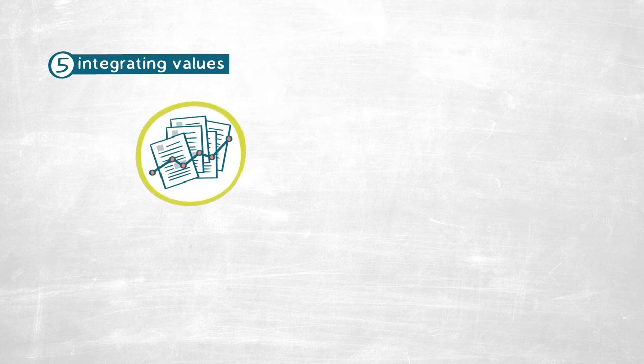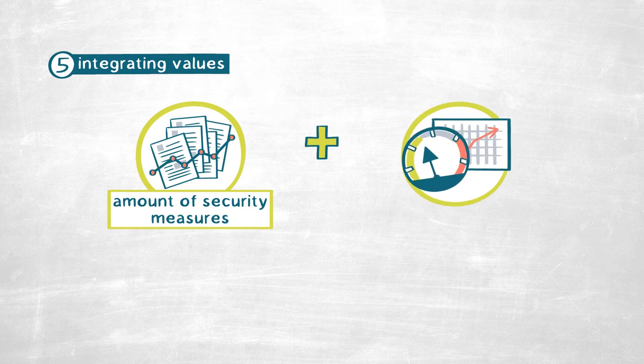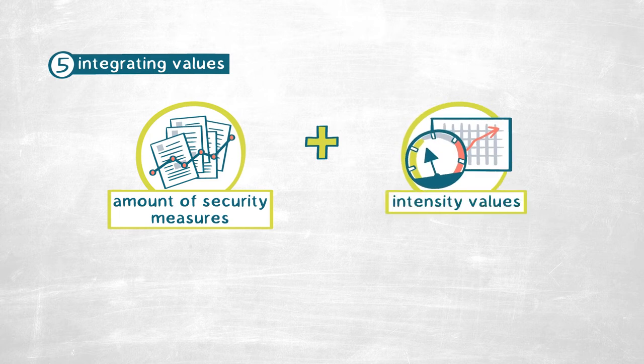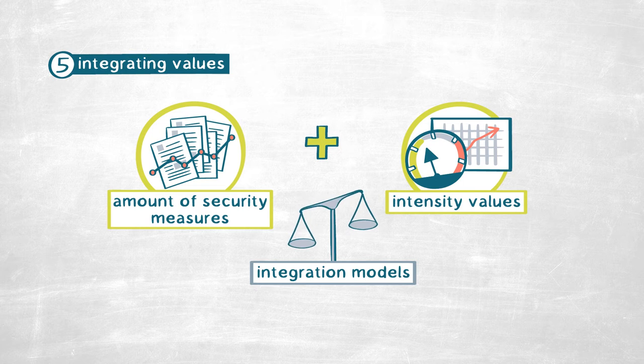We took the criteria for this matrix from the decisions of our Federal Constitutional Court on how it weighs the proportionality of security measures. Thus a matrix evolved that has more than a dozen criteria. The fifth step consists in integrating the empirical numbers on the amount of access security agencies took with the intensity values calculated for the different measures. We are working with two different models of integration: one gives more weight to the sheer amount of surveillance measures, and the other gives more weight to the intensity of the measure.